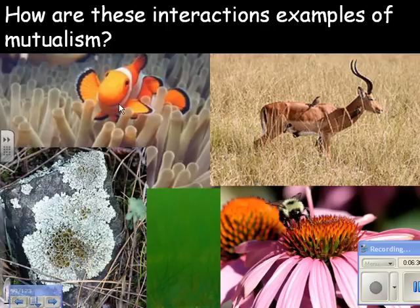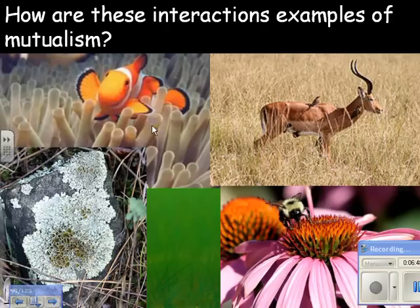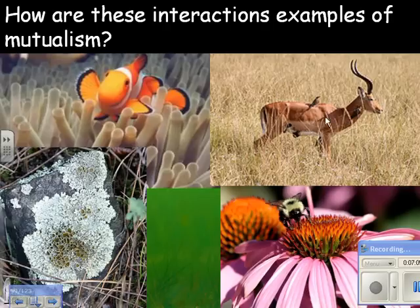More mutualism examples: clownfish live safely among sea anemone tentacles, while the clownfish's bright color attracts prey for the anemone. Lichen represent a symbiosis between fungi and algae — the algae get a moist place to live and the fungi get the photosynthetic products. An antelope gets bugs removed by birds, and a pollinator bee gets nectar while the plant gets pollinated.